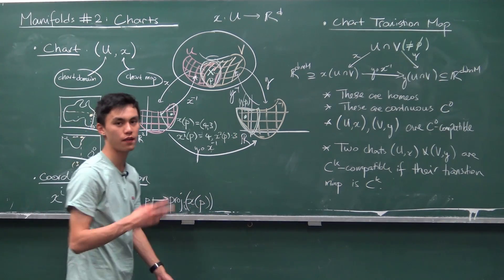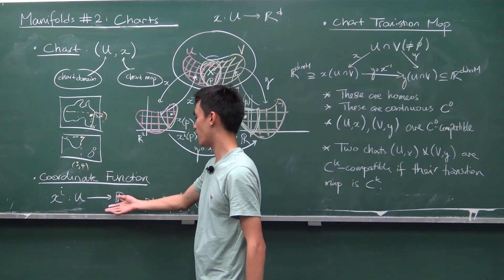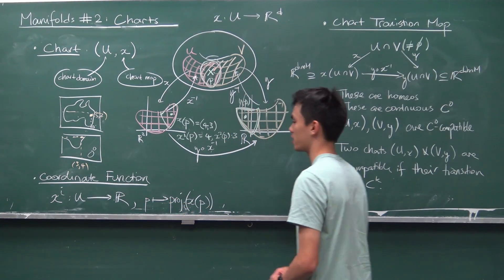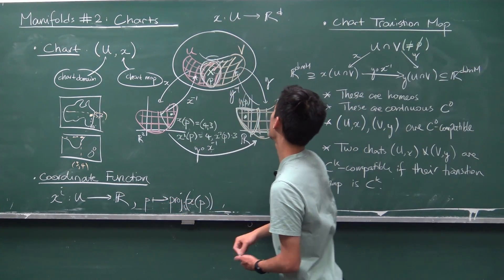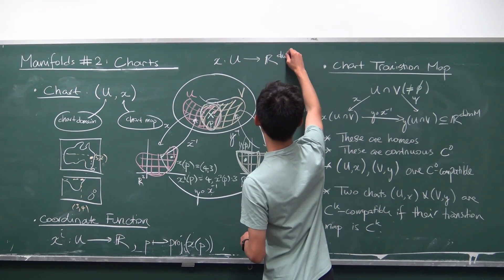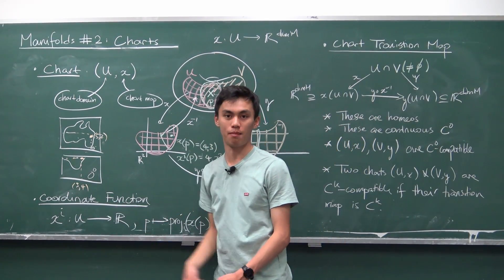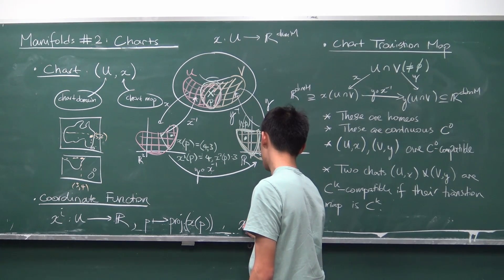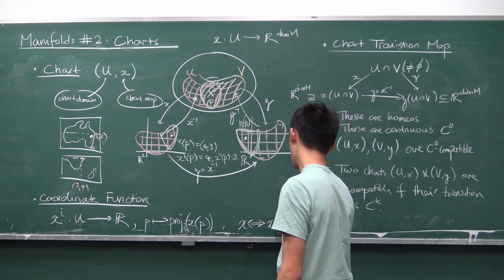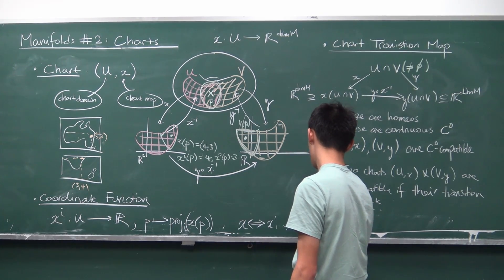Coordinate functions give you a particular number, which is just one component. Every single chart has a bunch of coordinate functions associated with it — in fact, there are dim(M) many coordinate functions, because the chart map X gives you dim(M) many real numbers. So the information carried by the chart map X is equivalent to the information carried by dim(M) many coordinate functions: X¹ all the way up to X^(dim M).